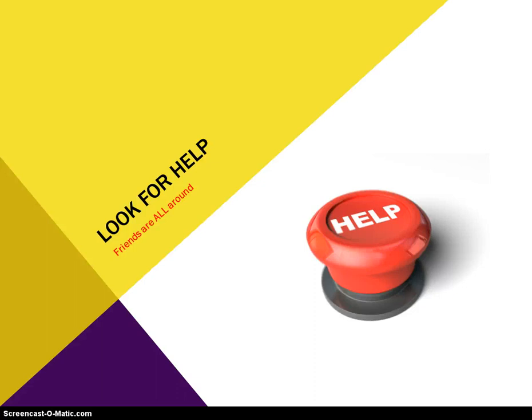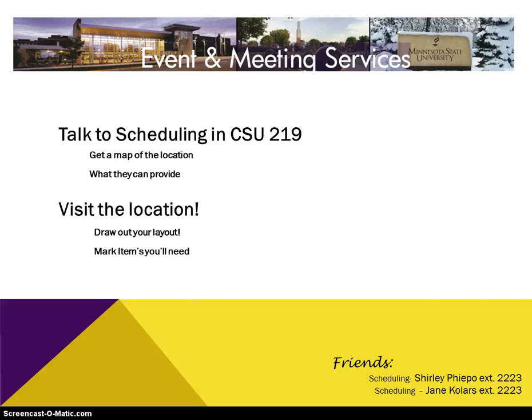The first place to stop is your friends in Event and Meeting Services, usually called scheduling. They're in CSU 219. They have a lot of variety of services for you — that's where you reserve your space. They'll have maps of the location and can tell you what they have and what they can't provide. Depending on where you want to go, you want to visit that location — it's extremely important. For homecoming, we have an event that's going to be on the PA steps at night, and it's supposed to be dark.